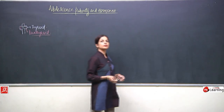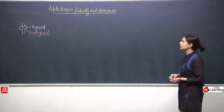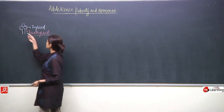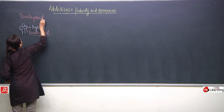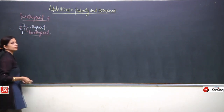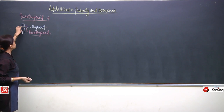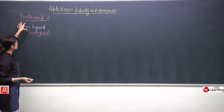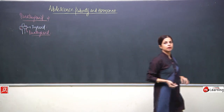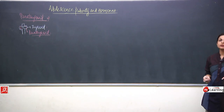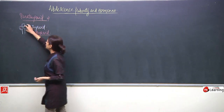Now we will be discussing about the next gland, which is parathyroid. Four parathyroid glands are present inside the thyroid gland itself, which is attached to the windpipe or trachea.